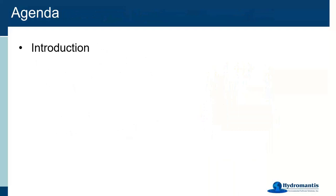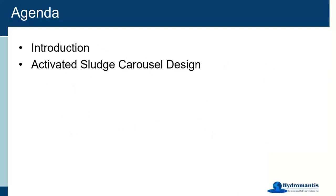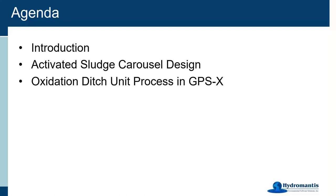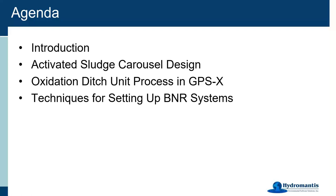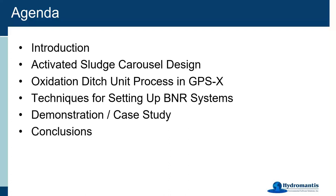For today, I'll talk a little bit about activated sludge oxidation ditch, or carousel as it's sometimes known — the design and important parts of those activated sludge designs when putting your model together. We'll discuss the oxidation ditch unit process model in GPSX, open up the menus, talk about important things to pay attention to, setting things up for BNR systems, and I have a couple demonstrations ready, a case study for a real plant, and then I'll stick around to answer questions at the end.